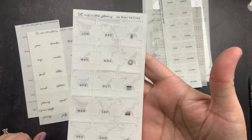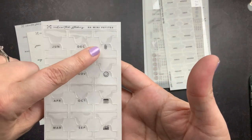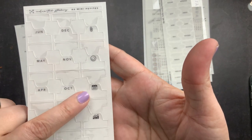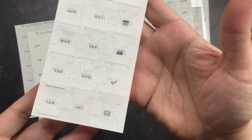And then this is the A6 mini petite size. Once again, you have all of your months. Then it has a little paper clip, a smiley face, a little calendar, like a little chart for trackers, a check mark, and then a little envelope that you could use to mark inbox or something like that.